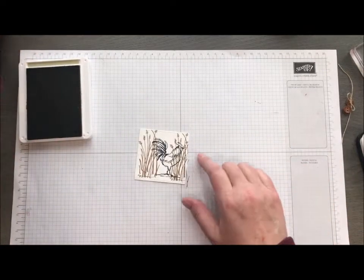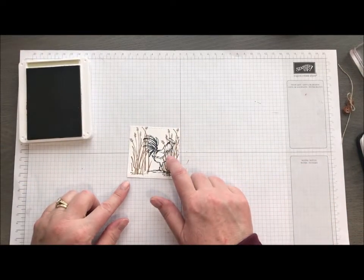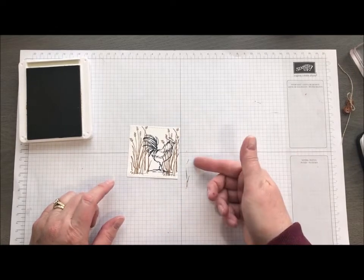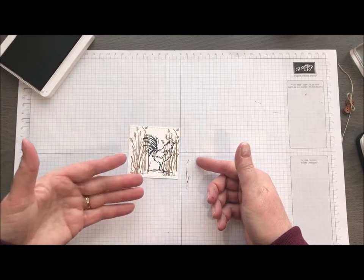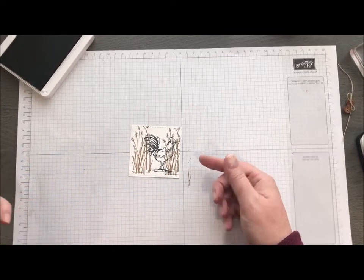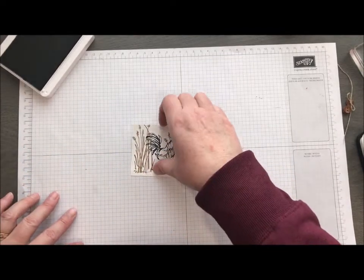Alright, so now you'll notice that I did go ahead and stamp over top of him and that's because I'm going to stamp him again in Memento Black on another piece. We're going to color it and cut it out and then layer that over top.